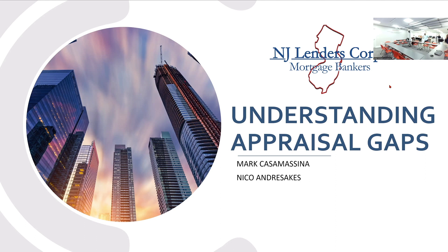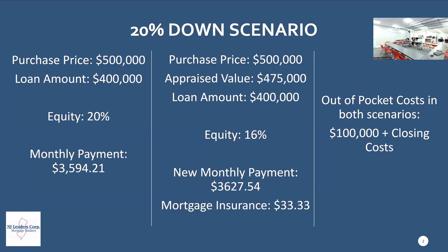We're going to do some scenarios today about how to understand appraisal gaps. It's very common that people today are trying to do whatever they can to get an offer accepted. I put together this quick PowerPoint where we're going to go through different scenarios, different offers that your clients may or may not have. We're going to keep consistent throughout: a 780 credit score and $10,000 of property taxes.